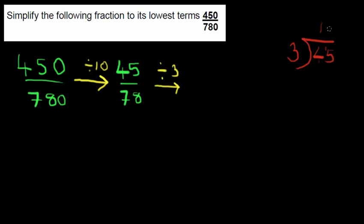Well, three into four is one remainder one, and three into fifteen, well that's five. And then three into seventy-eight, doing the same for the denominator: three into seven is two with one left over, and three into eighteen, well that's six.